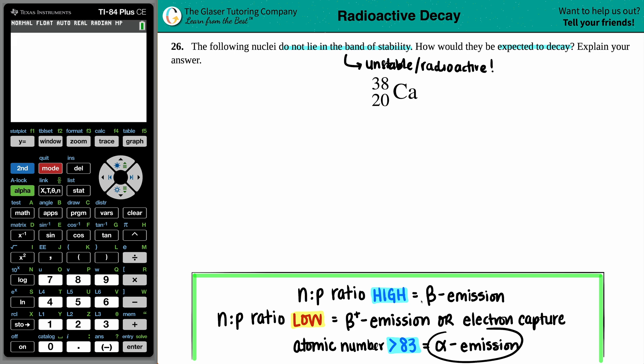First things first, I would rule out the alpha emission because that generally is only used for big atoms, right? When you have an atomic number that's greater than 83, here, our atomic number is only 20. So let's rule that one out.